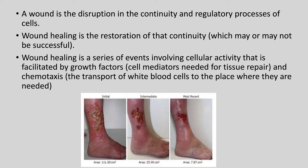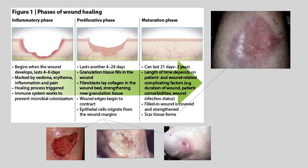Wound healing involves cellular activity facilitated by two things: cell mediators needed for tissue repair — specifically growth factors, so your body needs to be able to make growth factors — and chemotaxis, which is the transport of white blood cells to the places where they're needed.